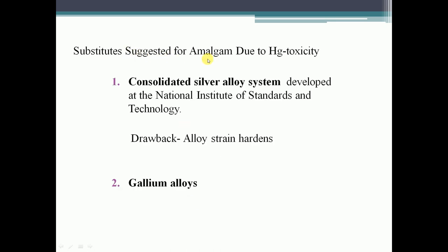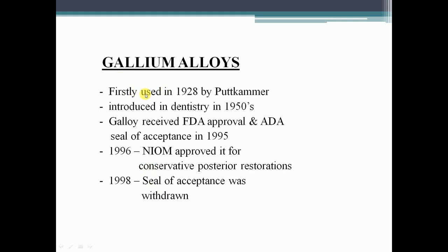Substitutes for amalgam due to mercury toxicity: consolidated silver alloy system developed at National Institute of Standards and Technology — drawback: alloy strain hardens. Gallium alloys: first used in 1928 by Putt Kramer, introduced in registry. In 1950s, Galloy received FDA approval and ADA seal of acceptance in 1995. In 1996, NIOM approved it for conservative posterior restorations. In 1998, seal of acceptance was withdrawn.